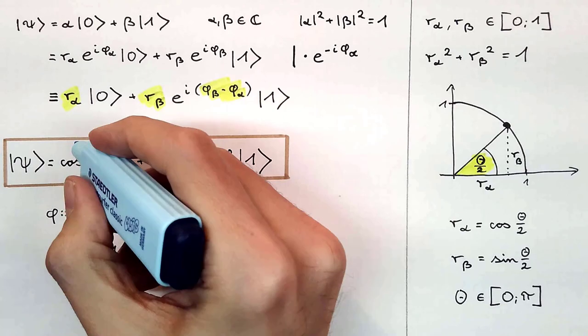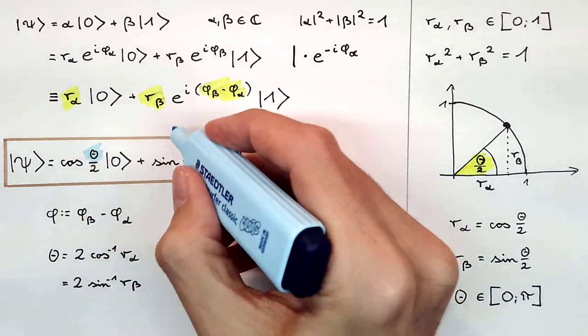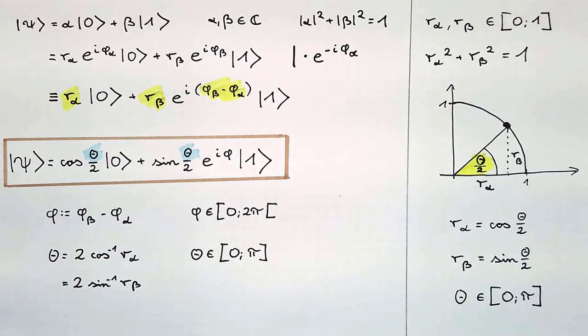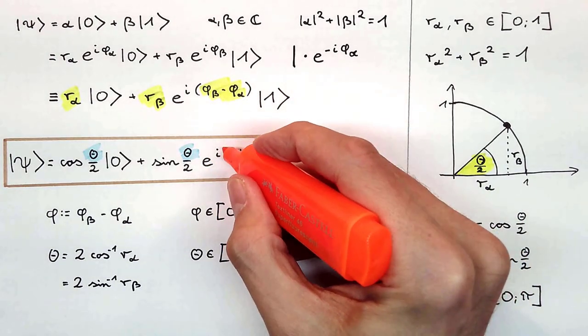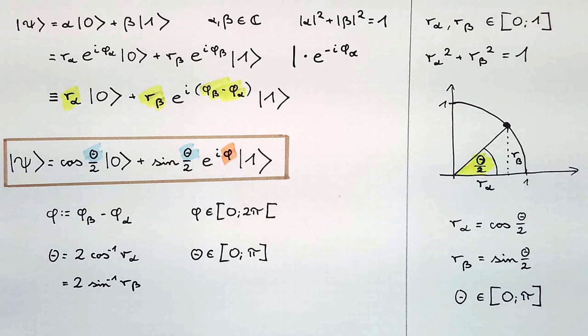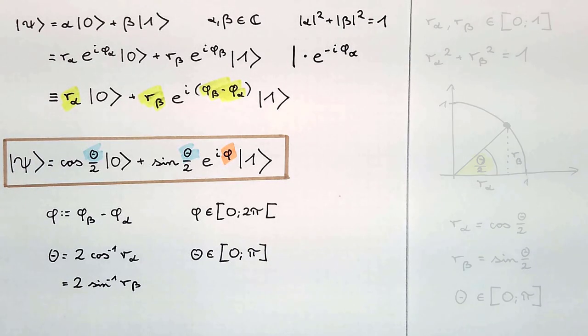If you look closely at the value ranges of phi and zeta, you might notice that these two angles could be used to determine a location on a unit sphere, with zeta as polar and phi as azimuthal angle. So now we use spherical coordinates to visualize a quantum bit. Let me explain how this works over here.